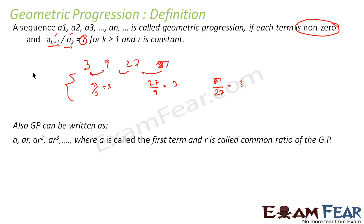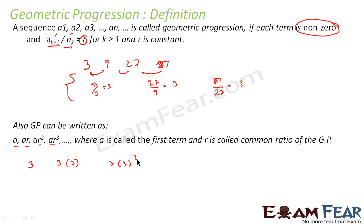A GP can also be written in the form a, ar, ar², ar³, and so on. For example, where r equals 3 and a equals 3, we can write the GP as 3, 3×3, 3×3², 3×3³, which gives 3, 9, 27, 81.